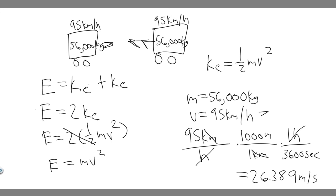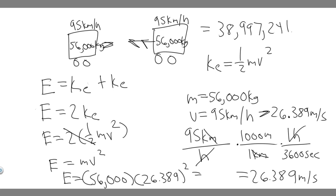So now we can just plug it in. E equals the mass, which is 56,000, and then multiply that by 26.389 squared. So if you go ahead and do this, 56,000 times 26.389 squared, you're going to get that it equals 38,997,241.98.